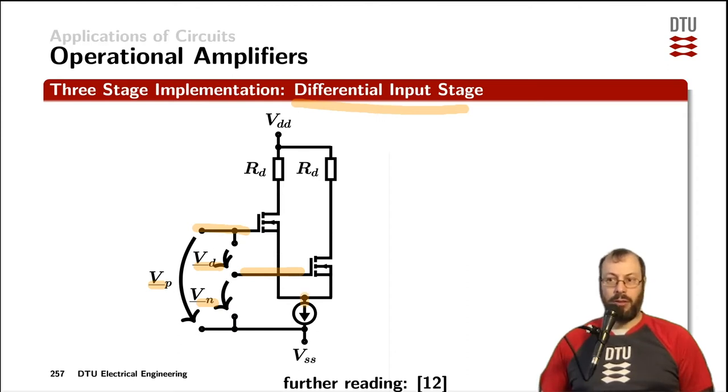Now the current source down here, which typically also would be implemented through various transistors but drawn here as a current source, is providing a constant current that is shared between the two branches here. Depending on how much you open or close one of those two transistors, so controlling the GM value of each of those MOSFETs here by their respective gate voltages, which are the input voltages, we get more or less current in each of those two branches on the drain of the MOSFETs. And that in turn controls the voltage drop across the drain resistors.